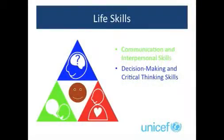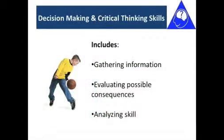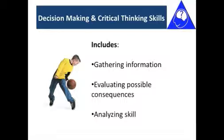The next category of life skills is decision-making and critical thinking skills. These include characteristics such as gathering information, evaluating possible consequences, and analyzing skills. Examples include viewing information from various sources and making a decision through a critical and formative lens.